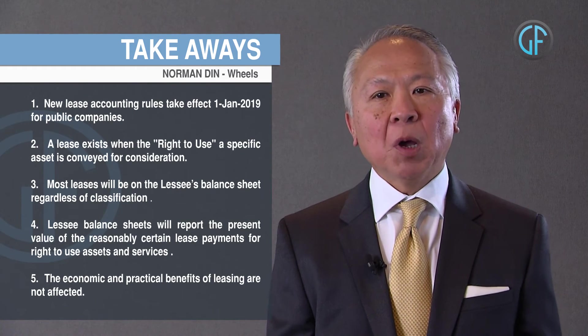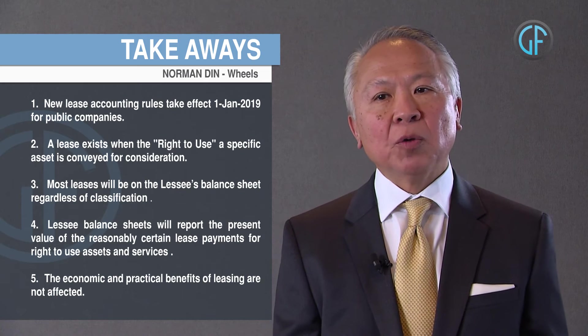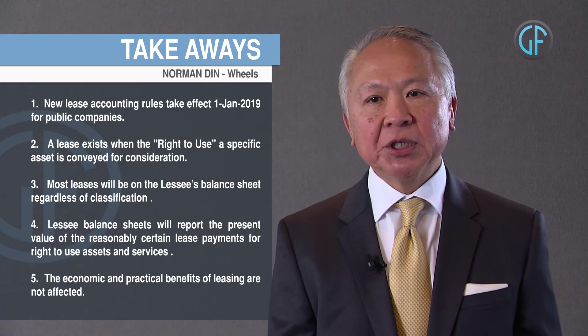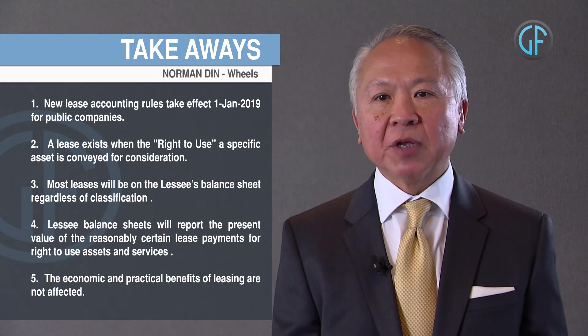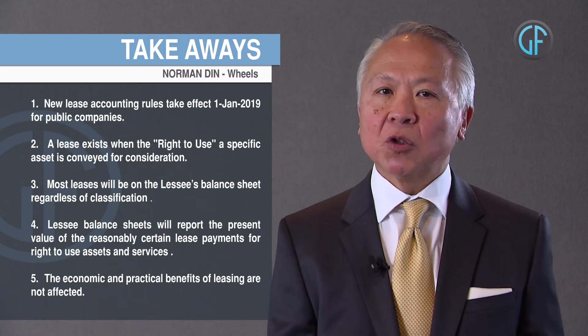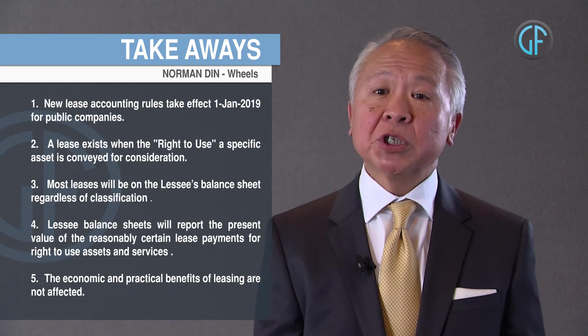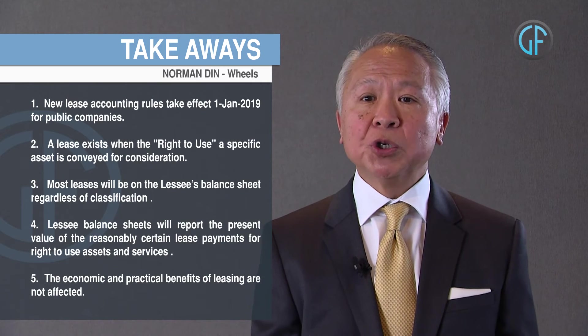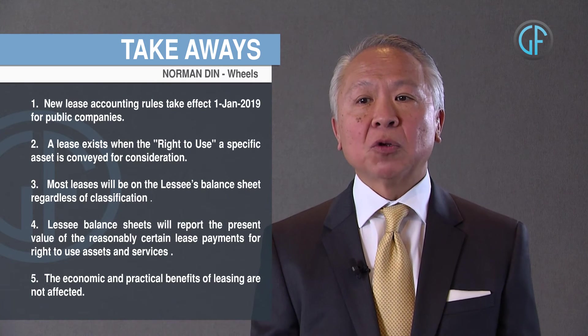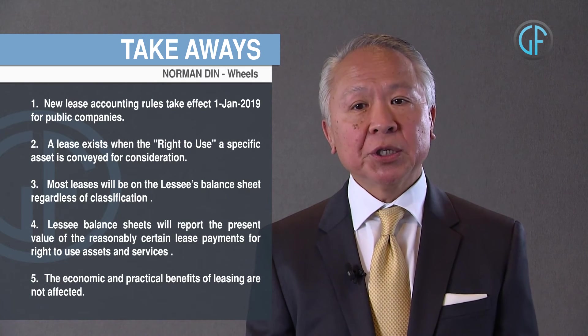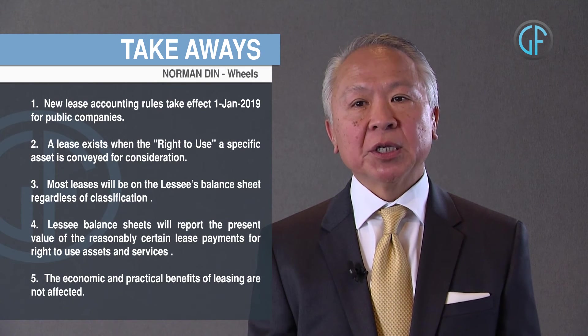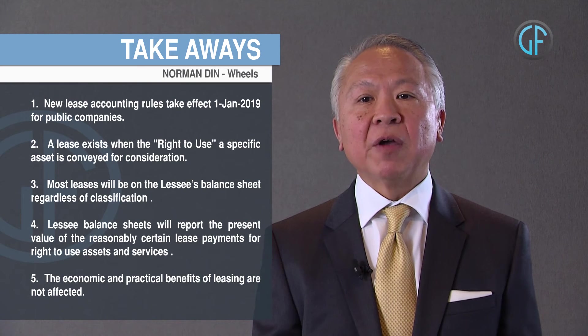As a result, public companies will now include operating leases, capital leases, and finance leases on their balance sheets. There are a few exclusions, which include leases that are 12 months or less and assets that are less than $5,000.